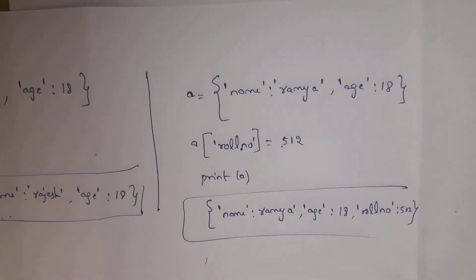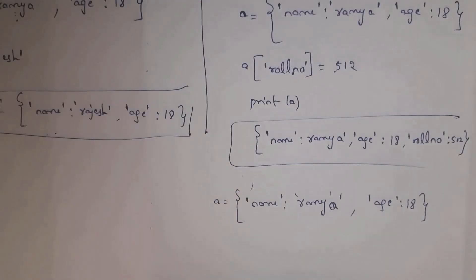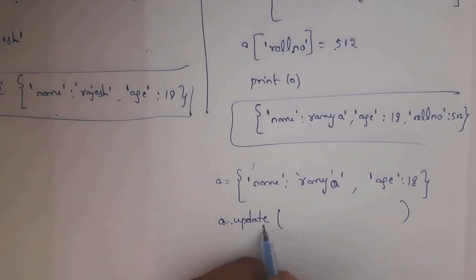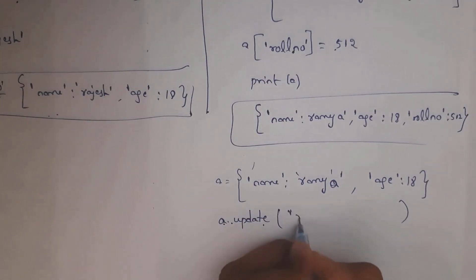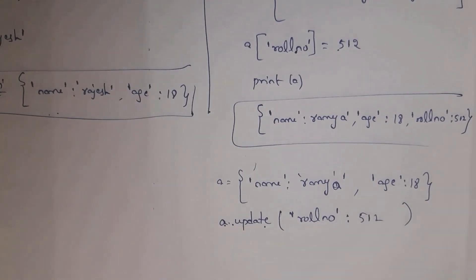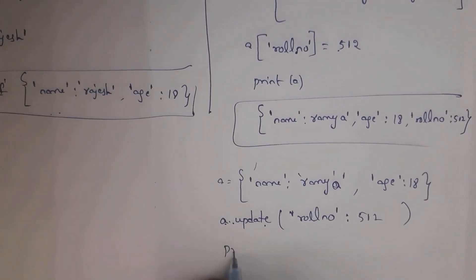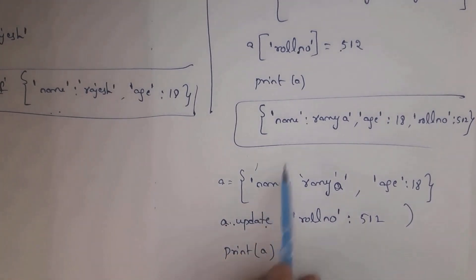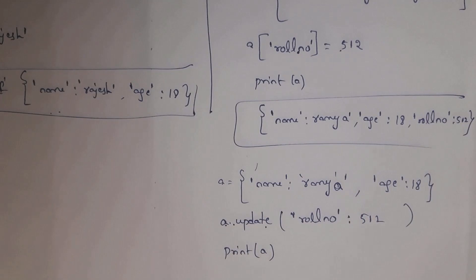Instead of directly assigning a new key-value pair, you can also use the update() method. Write a.update({'roll_number': 512}) and this will add 'roll_number': 512 to the dictionary. After running print(a), you will get {'name': 'ramya', 'age': 18, 'roll_number': 512}. The update() method lets you add both key and value to an existing dictionary.